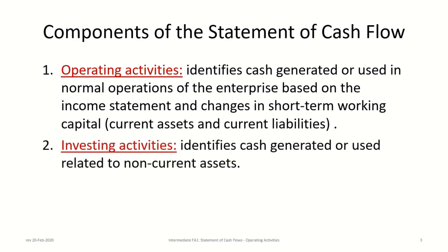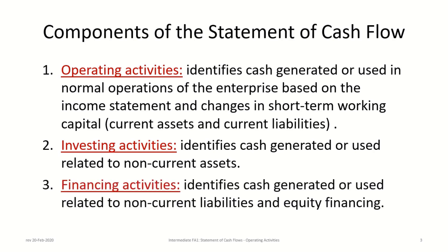The second section is investing activities, which identifies cash generated or used related to non-current assets, including the purchase or sale of property, plant and equipment and other investments. The third section is financing activities, identifying cash related to non-current liabilities and equity financing — including bonds, mortgages, long-term debt, and shareholder transactions like share issuances, repurchases, and dividends paid.